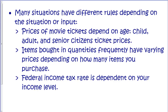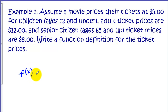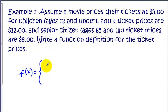So let's look at the movie ticket price example. We have three kinds of tickets: child tickets, adult tickets, and senior citizen tickets. We want to write a function definition — let's call it function p, and we'll use x for the age of the person buying tickets. When it's a piecewise function, we use a bracket, and each rule is composed of two parts: the actual rule for the price, and the domain for that rule, meaning the values of inputs that rule applies to.